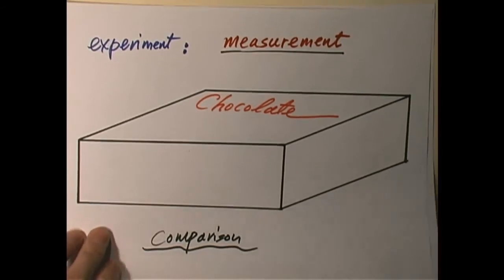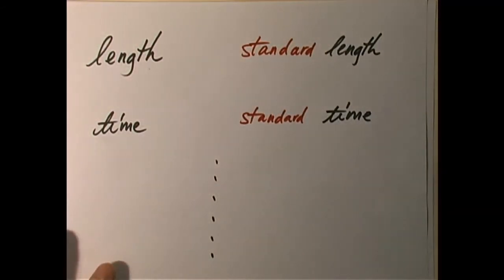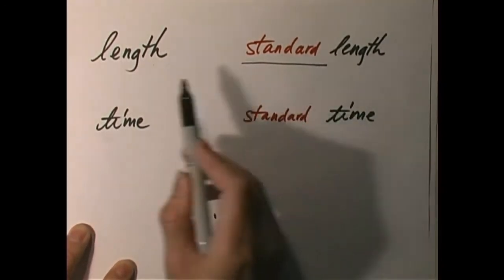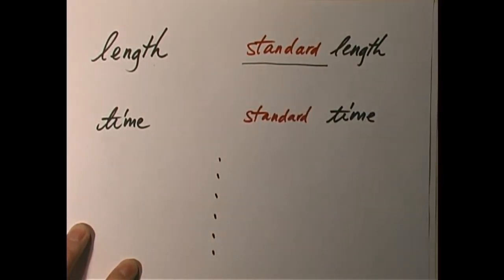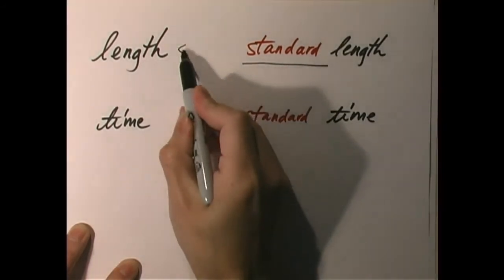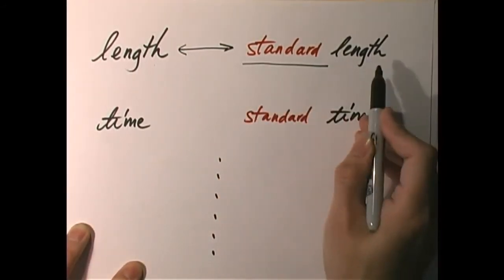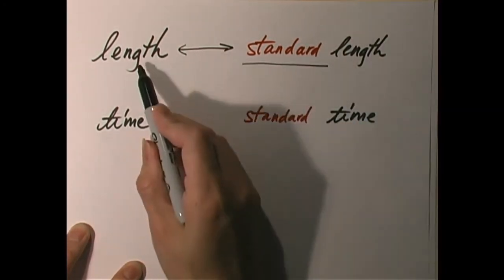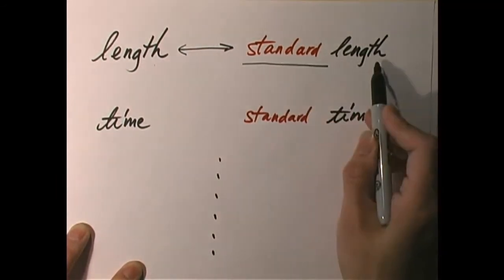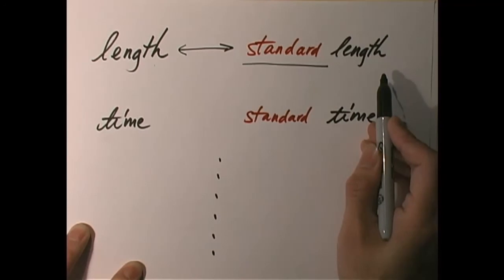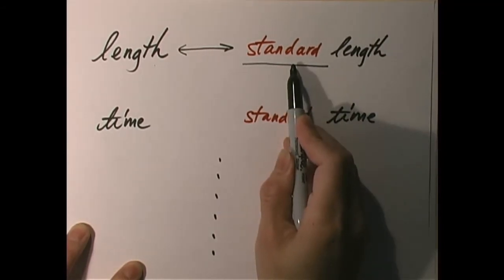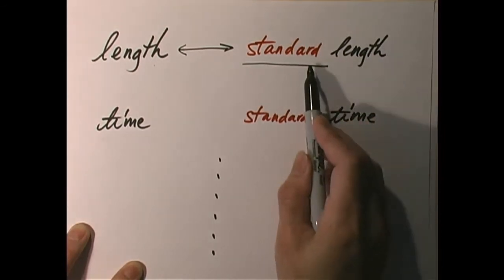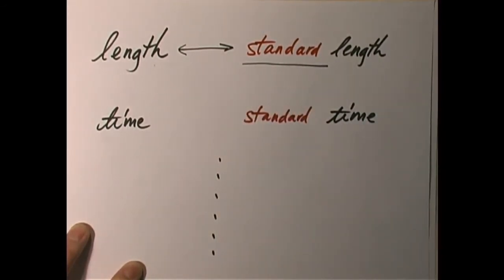So in order to make a scientific measurement, it is clear that we must establish a standard. For example, to measure the length of an object, we must first establish what's called a standard length — be it meter, centimeter, inch, whatever — but it has to be standard so that it's universally accepted and everybody knows what we're talking about. We compare the length in question with the standard length, we get a number. Our length, the length of the box, is 15 times the standard length, which is a centimeter. That is why we say it's 15 centimeters long. That is what we do in a measurement.